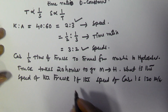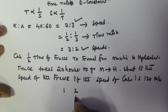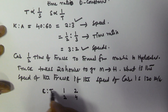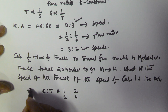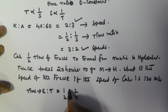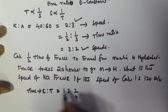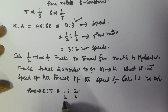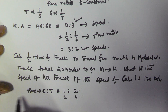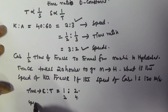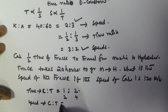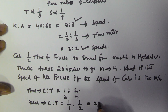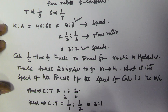Since the car takes half the time of the truck, if the truck takes 2 hours the car takes 1 hour, so the time ratio of car to truck is 1:2. Since speed is inversely proportional to time, the speed ratio of car to truck is 1/1 : 1/2, which equals 2:1.